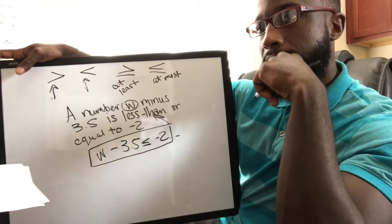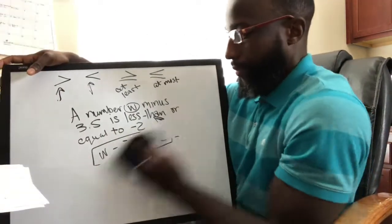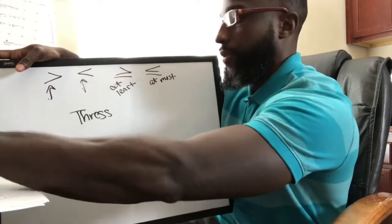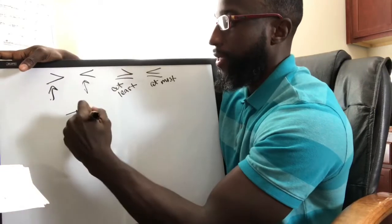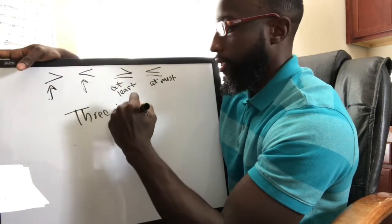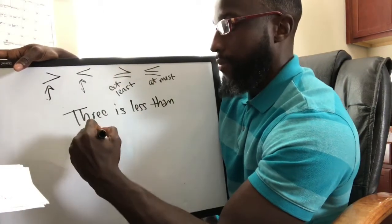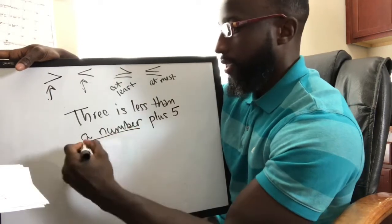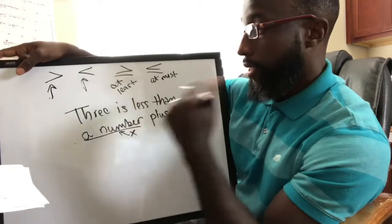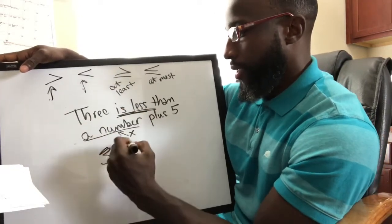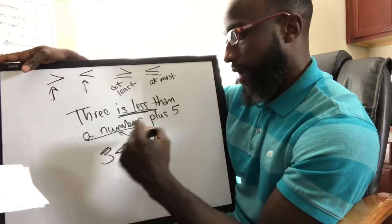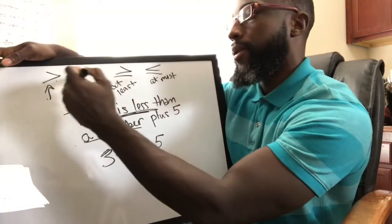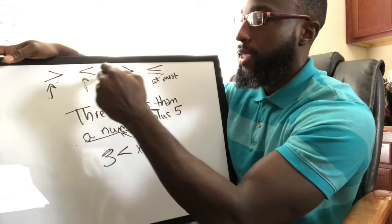Let's look at another problem. This one says: 3 is less than a number plus 5. When it says 'a number,' that's a variable — we'll make it x. So 3 is less than x plus 5, written as 3 < x + 5. It's straightforward. The most important thing is keeping in mind what these symbols mean in words.